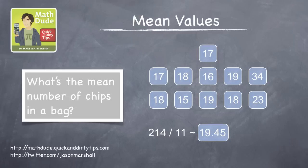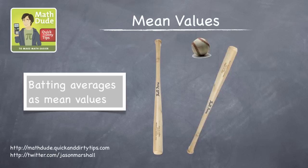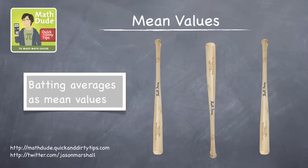In episode 21 of the podcast, we talked about batting averages in baseball as another example of mean values. But how exactly are batting averages mean values? It doesn't really seem like the same type of problem as adding potato chips, right? What do we add up? And then what do we divide by?